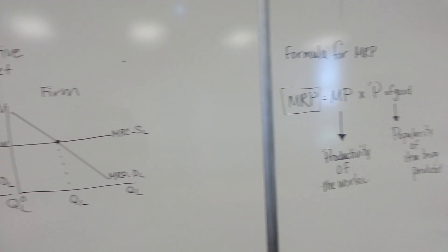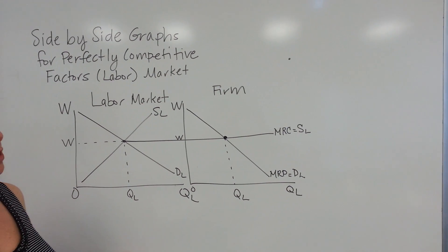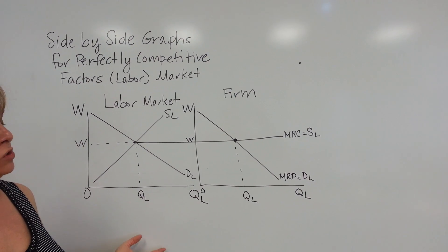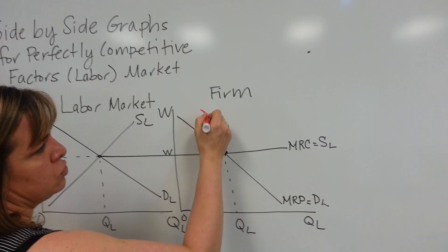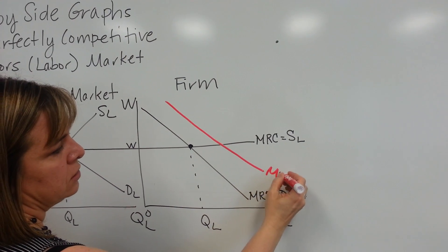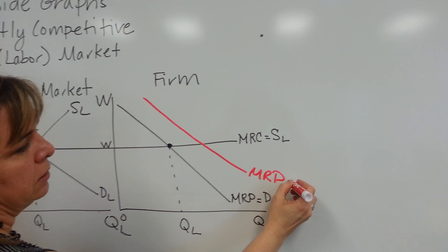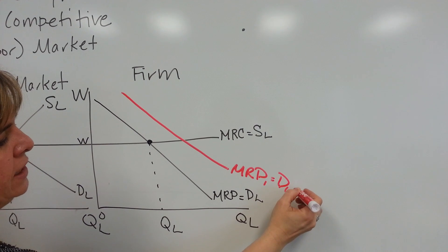So if, for example, the productivity of the workers increases, it'll increase my MRP. So I can draw a new MRP curve right here, and that's a new demand for labor curve.